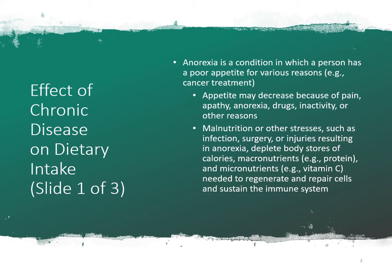The first topic is anorexia and appetite. Anorexia is a term for a condition in which a person has a poor appetite — it can be for any reason: not wanting to gain weight, going through illness, cancer treatments, or chronic pain. Malnutrition or other stresses such as infection, surgeries, or injuries resulting in anorexia will deplete the body's stores of calories, macronutrients, and micronutrients needed to regenerate cells and sustain the immune system. As a result, those with anorexia are more susceptible to bacterial or viral infections.